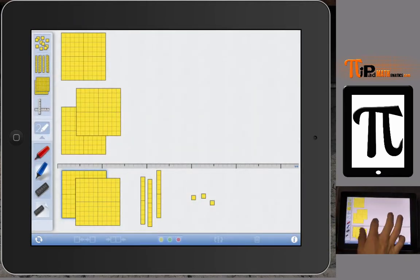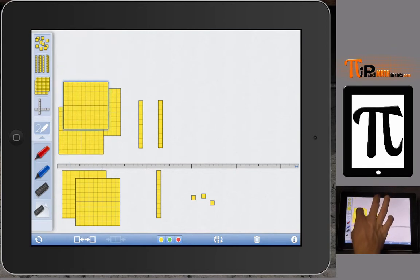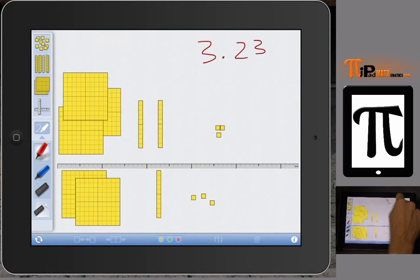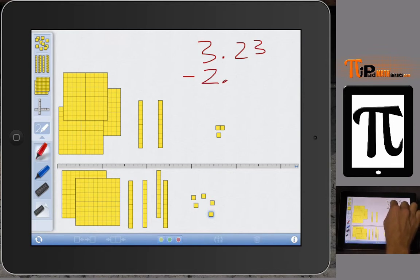Let me do one with subtraction here. I'm going to make this 3 and 23 hundredths. And we want to subtract 2 and 45 hundredths. And find that solution.